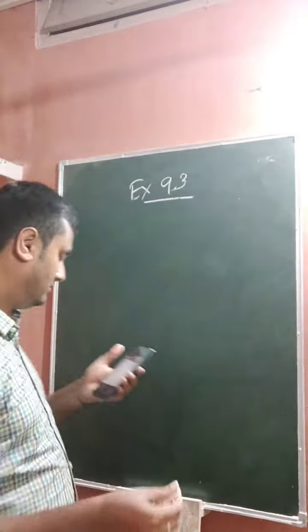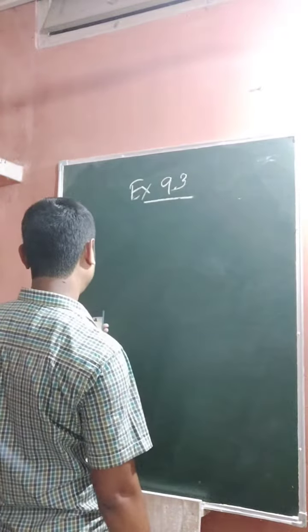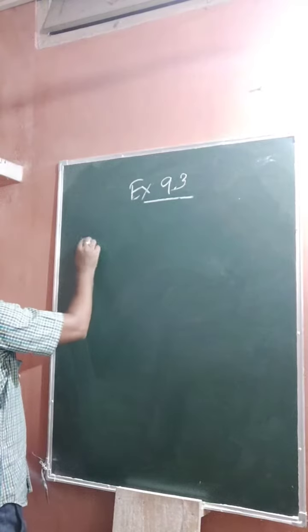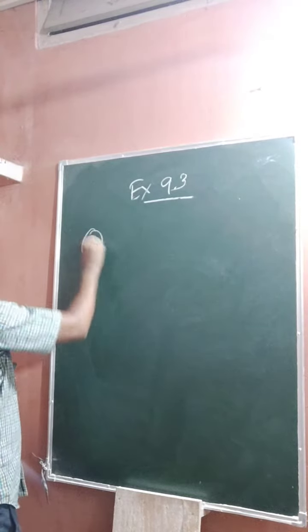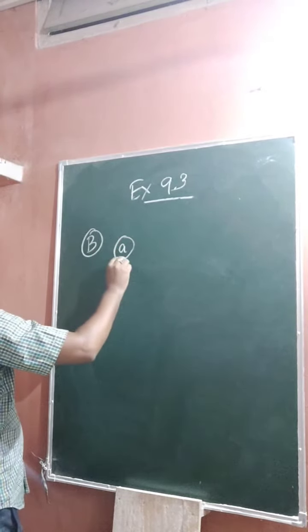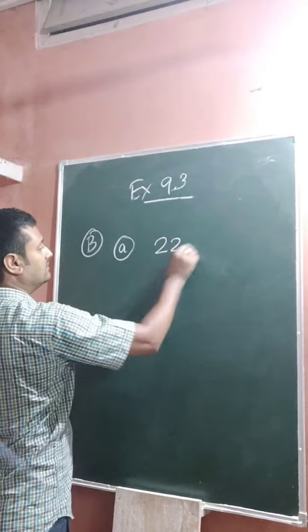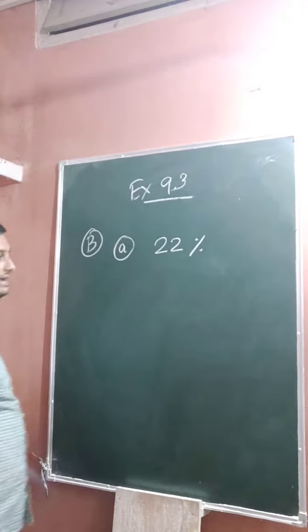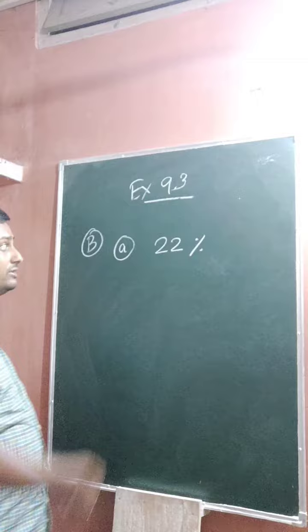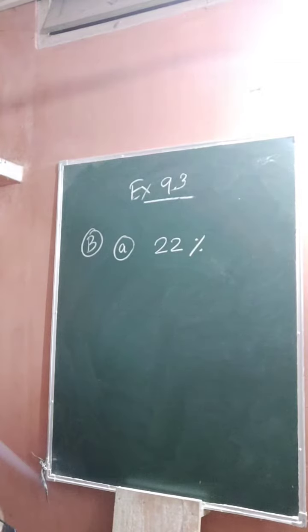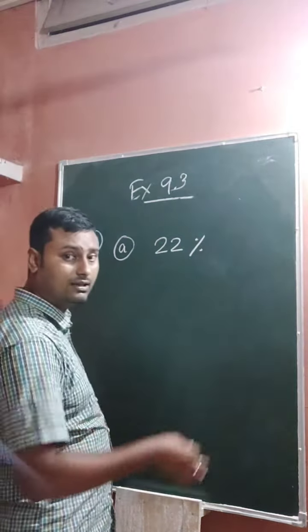Come to question number B: convert each of the following percent into decimal. The question is given in the form of percentage. You have to write into decimal. Before writing to decimal, you have to convert into fraction, after that you can write in decimal.